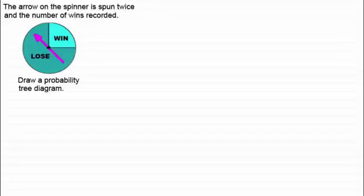Hi, this is a follow up to the previous video where I showed you how to draw tree diagrams. In this video I want to extend that work to drawing probability tree diagrams. You might recognise we had this example in the previous video where we have a spinner — the arrow will either land in the win sector or the lose sector, so we'll either win or not win. I showed you how to draw a tree diagram for something like that.